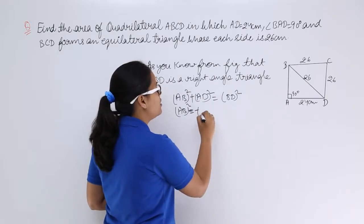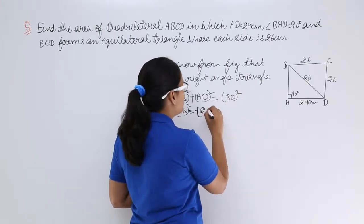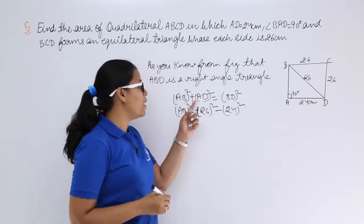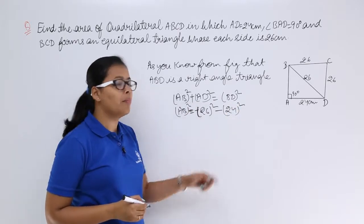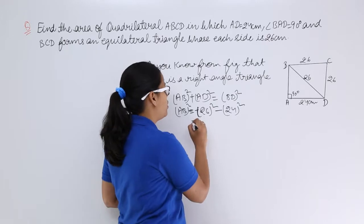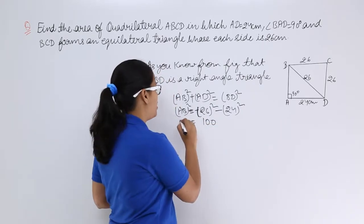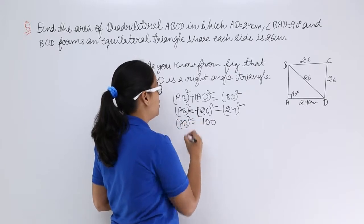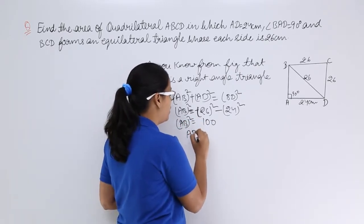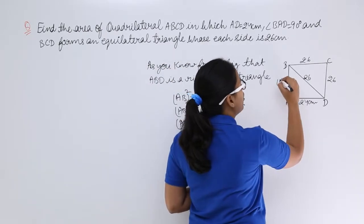Value for BD is 26, so AB square equals 26 whole square minus 24 whole square. When this value comes on your right hand side this will become negative and now you need to find out this subtraction. On subtraction you will be getting 100 and this is equal to AB square. So when you take the root of 100 you know that you will get 10. So this is going to be 10 centimeters. So now you know this side.